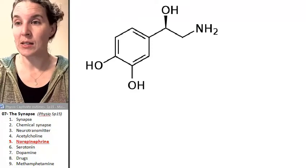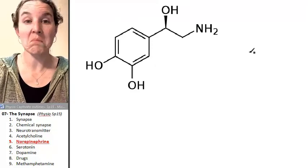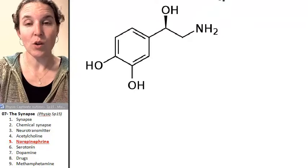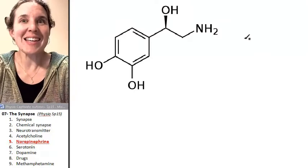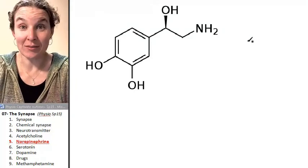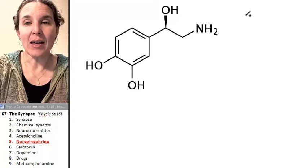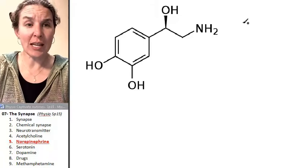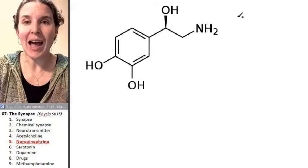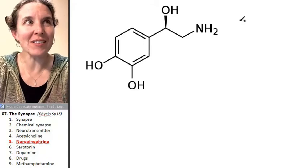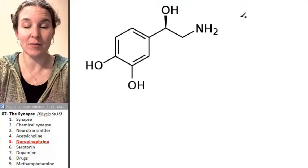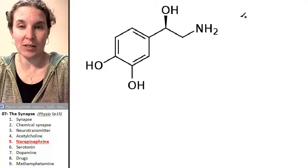Norepinephrine is a substance — this is what it looks like. Norepinephrine is essentially adrenaline, and so it tends to be excitatory. However, apparently in the brain, it can actually inhibit responses.